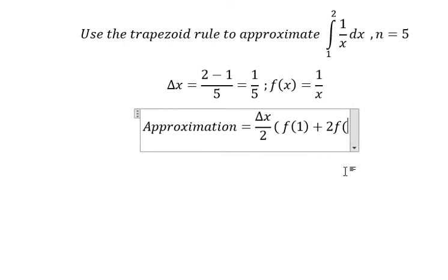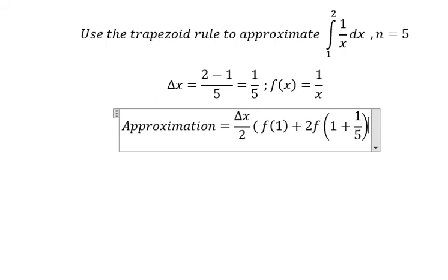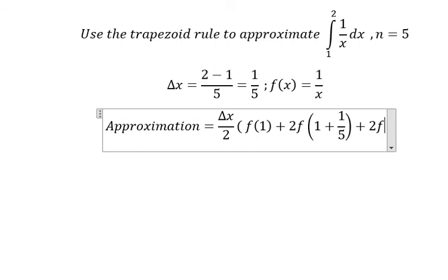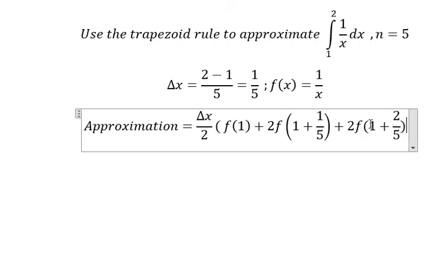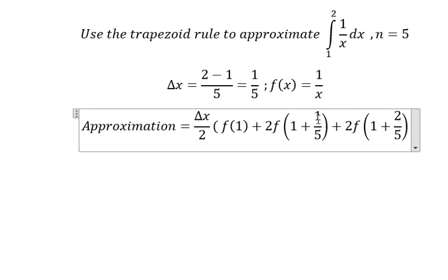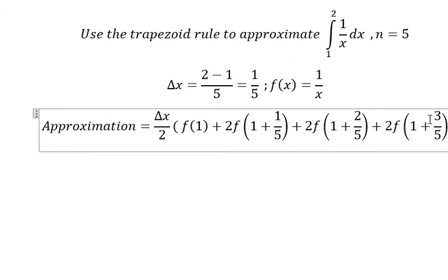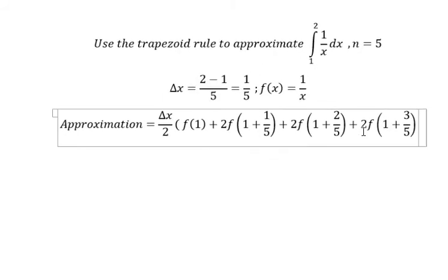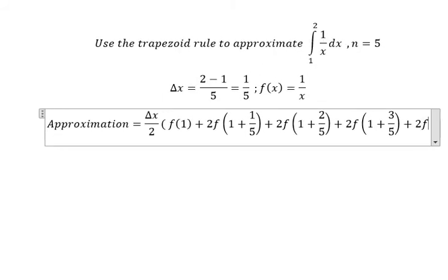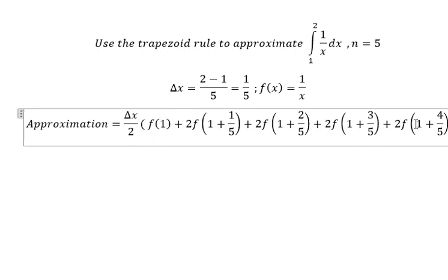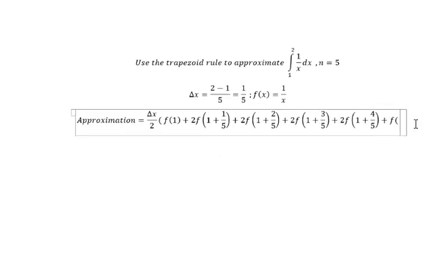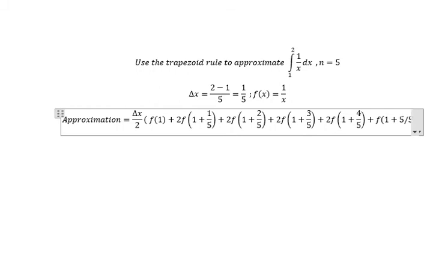We have 2 f of (1 + 1/5). That is for delta x. Then 2 f of (1 + 2/5), because we add one more unit of 1 over 5 — that's why you get 2 over 5. Then 2 f of (1 + 3/5), adding one more unit of delta x, which is 1 over 5. We continue until we reach 1 plus 5 over 5.